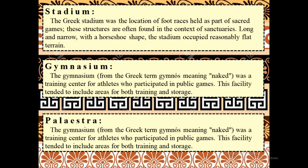The Greek stadium is the location of foot races held as part of sacred games. These structures are often found in the context of sanctuaries. Long and narrow, with a horseshoe shape, the stadium occupied reasonably flat terrain. The gymnasium, from the Greek term gymnos meaning naked, was a training center for athletes who participated in public games. This facility tended to include areas for both training and storage.